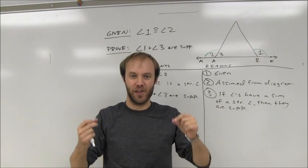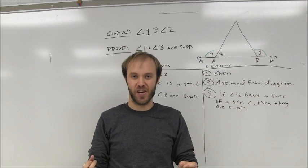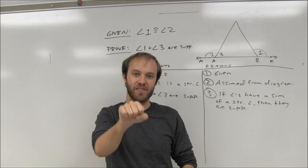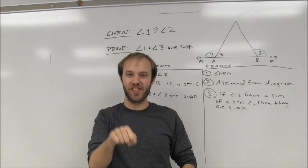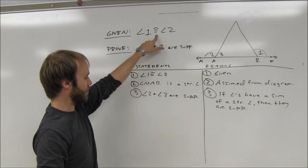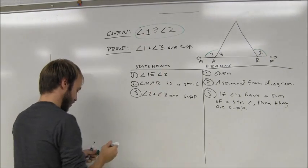Anytime I have two statements that look very much alike, except for one possible change, I always try to look around and see if I have anything that I can put in place of one of those values to change that to being the same statement as the one that I'm trying to prove. That's when you notice that the given tells us angle 1 is congruent to 2.